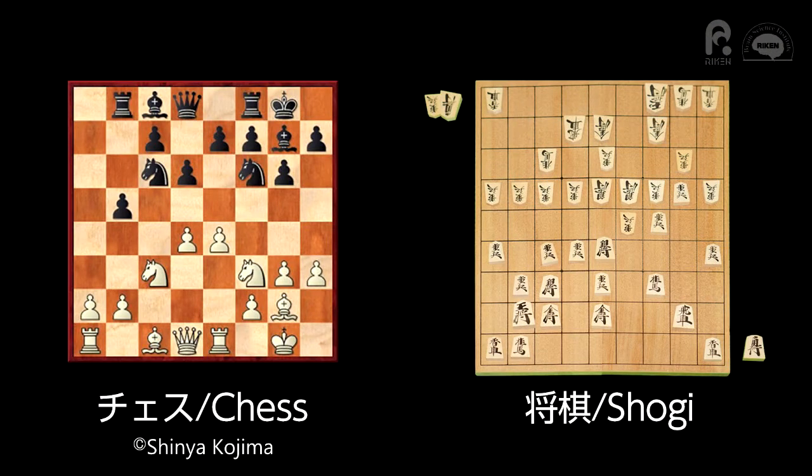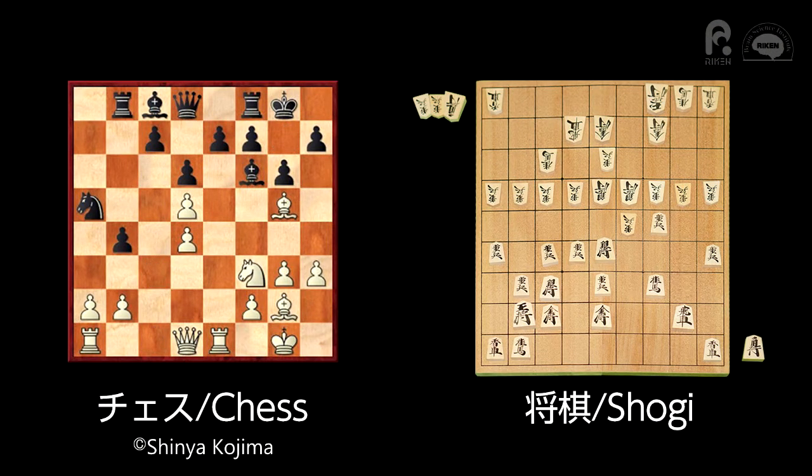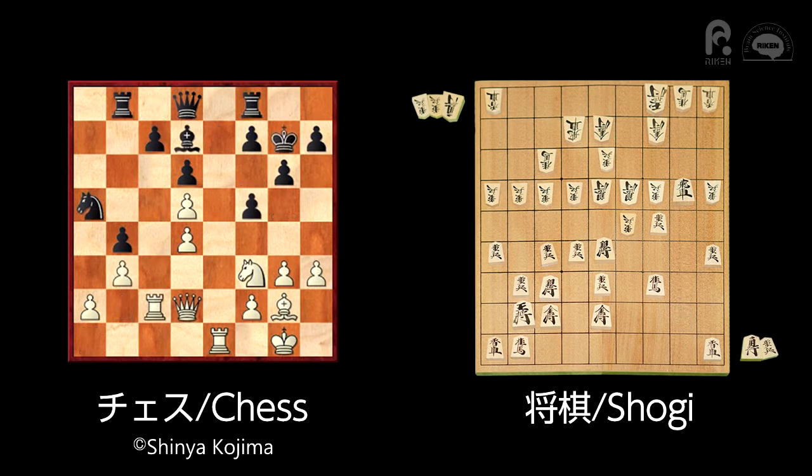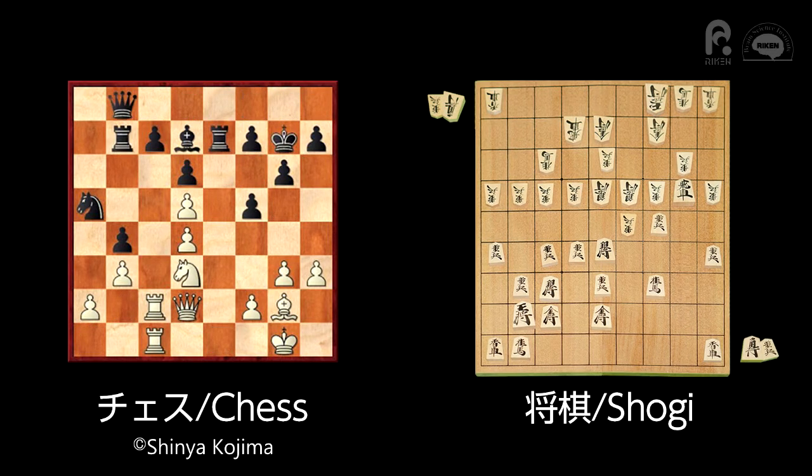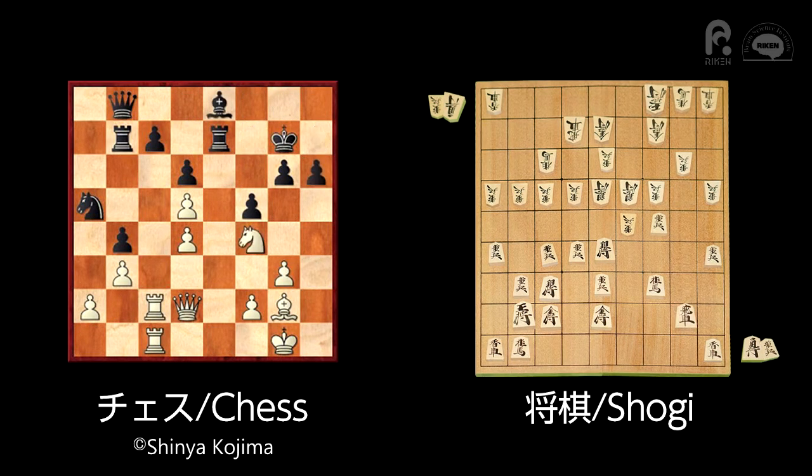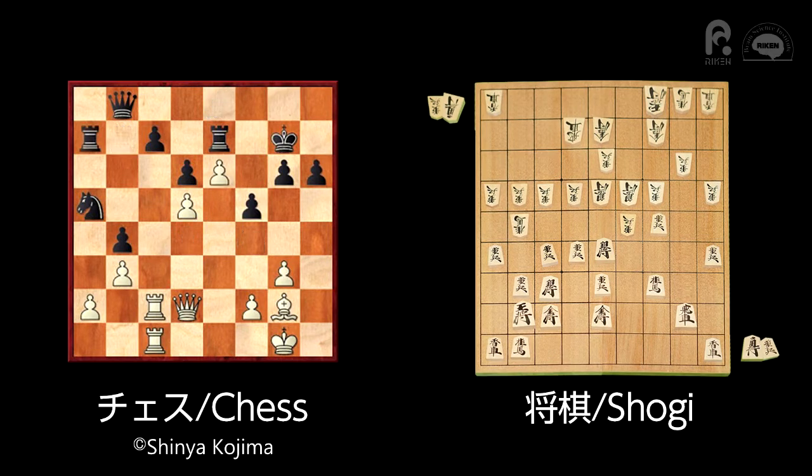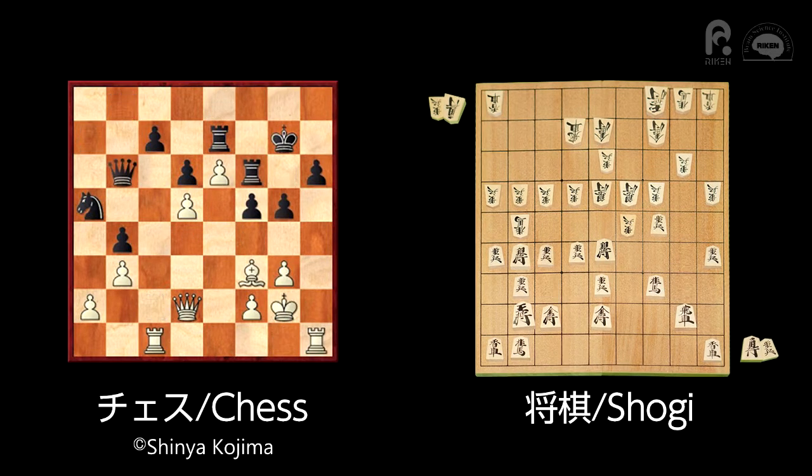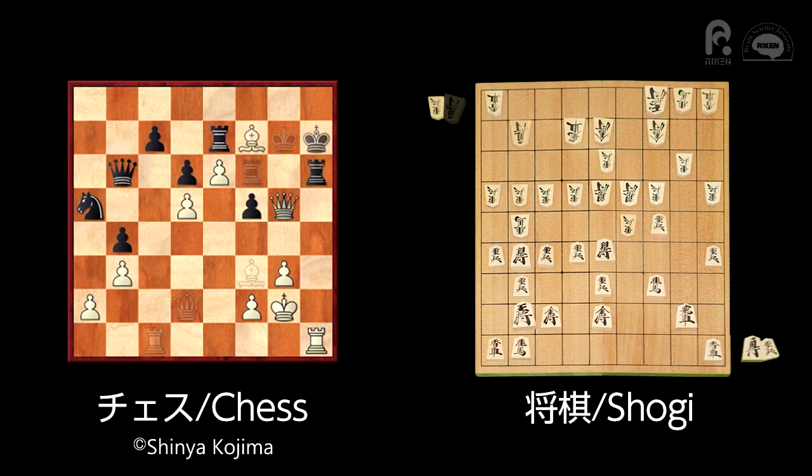But unlike chess, in shogi, players can return their opponent's captured pieces again to the board as pieces of their own side. Because of this rule, the number of pieces on the board doesn't decrease towards the end of the game in shogi, and moves can be more clearly classified into defense and attack than in chess.